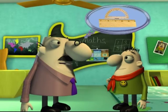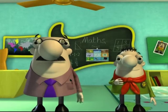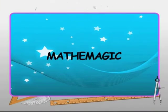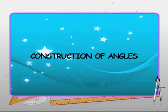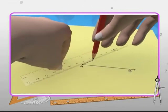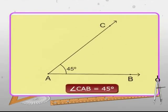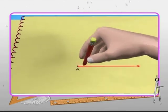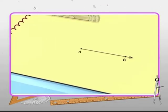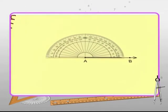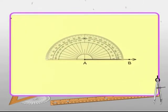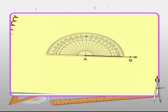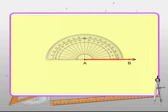We will need a ruler and a protractor to construct them. Math magic will show us how. To construct an angle of any given degrees, say 45 degrees, first draw a ray. Label the ray as AB. The center point of the protractor should be placed on the end point A of the ray AB. The baseline of the protractor should coincide with the ray AB. In this case,